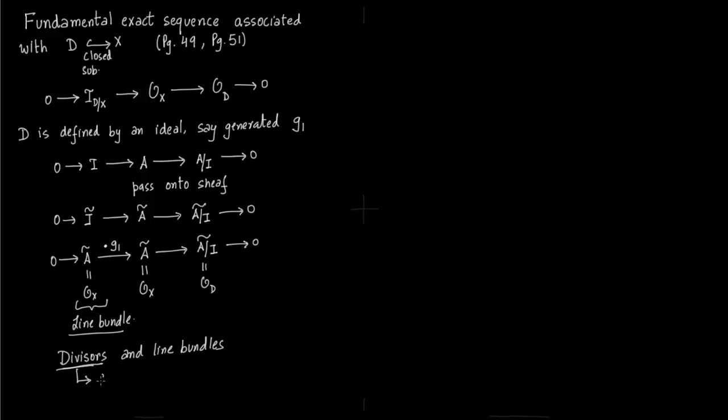Later we'll talk about what divisors are. You just need to know they correspond to free abelian groups generated by these codimension 1 subvarieties. For example, D is one of those subvarieties and this D would generate a line bundle O of X because you could multiply it by g1.